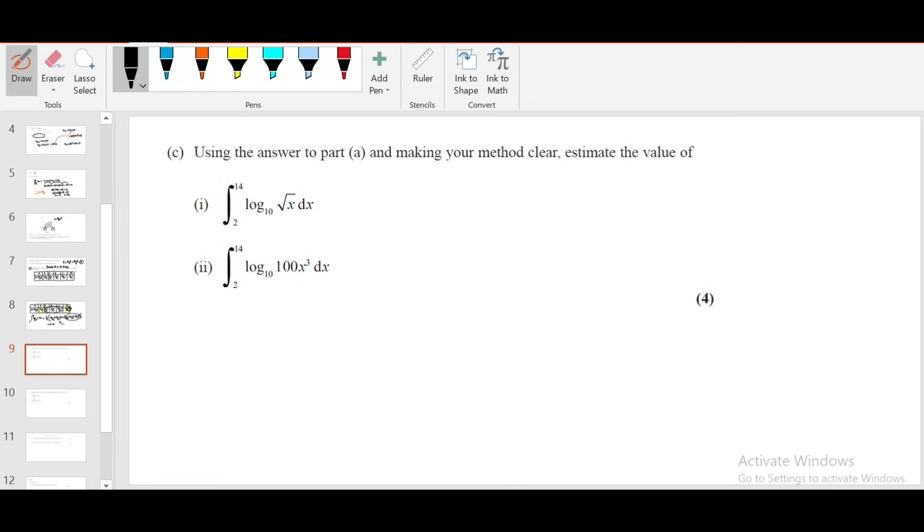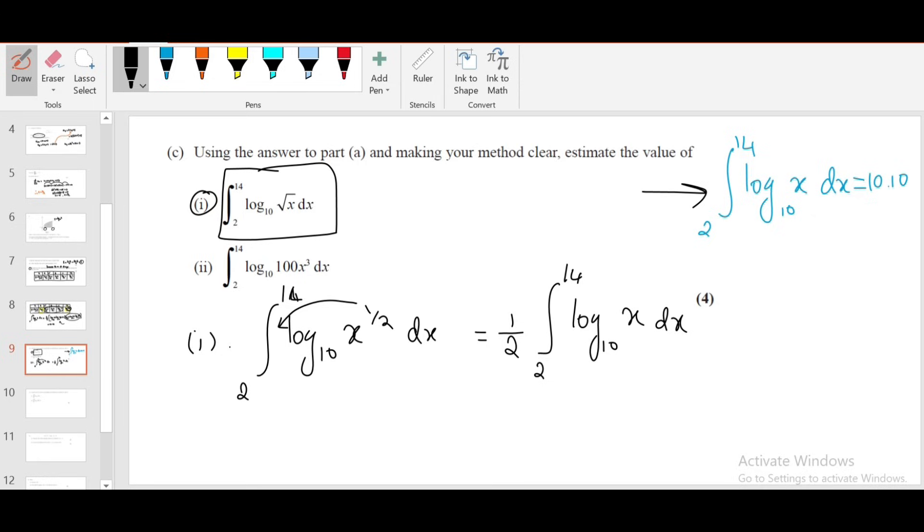Part C(i): Using your answer from part A, estimate ∫₂¹⁴ √x dx. We can write this as ∫ log(x^(1/2)) dx = (1/2)∫ log x dx. Which is (1/2) × 10.10 = 5.05.